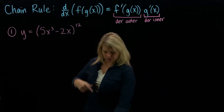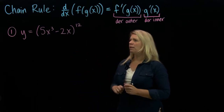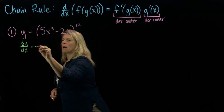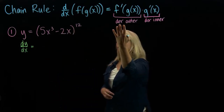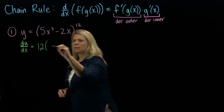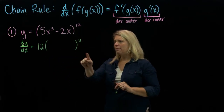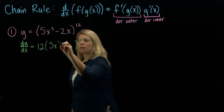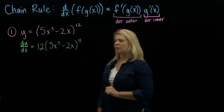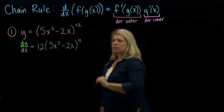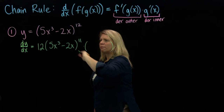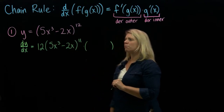We can see that we have a polynomial function inside and a power function on the outside. When we find that derivative, dy/dx equals — we start by taking the derivative of the outer function, that's the 12th power, so we multiply by that exponent out front and subtract 1, leaving the inside alone. Then we take that times the derivative of the inner function — the derivative of 5x cubed minus 2x.